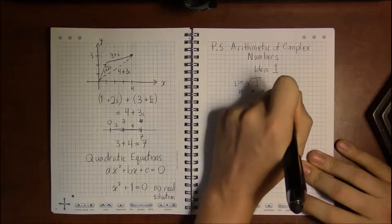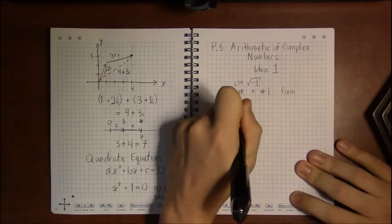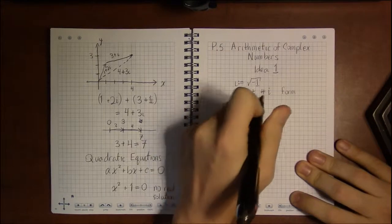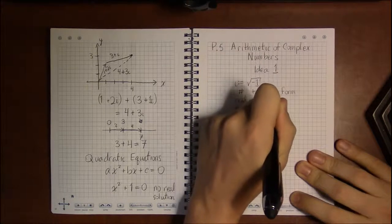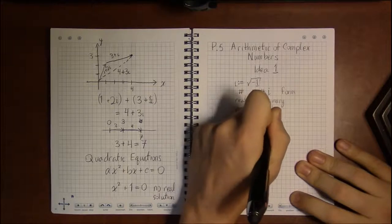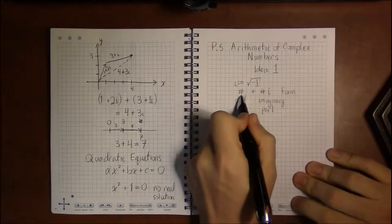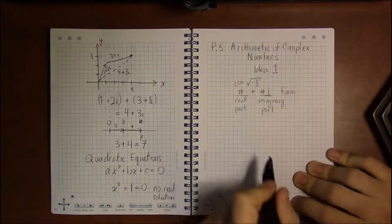So complex numbers have the form something plus something times i. This is the form of a complex number. It has a real part and what's called an imaginary part.